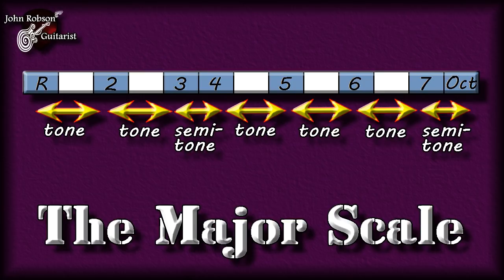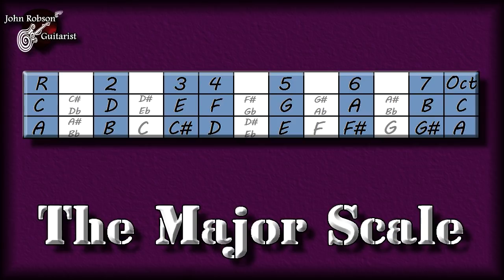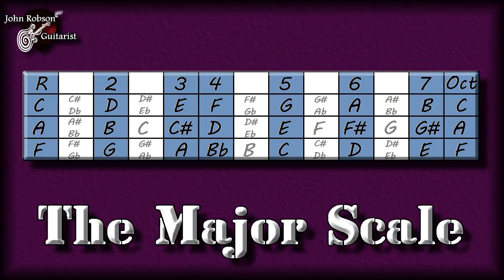Now you can understand what is meant when people say a fifth or a sixth — you know how many semitones, how many frets on the guitar, that refers to. For example, starting on C gives us C D E F G A B C; starting on A gives us A B C# D E F# G# A; and starting on F gives us F G A Bb C D E F.